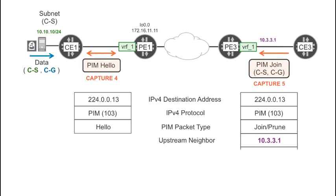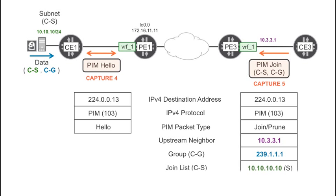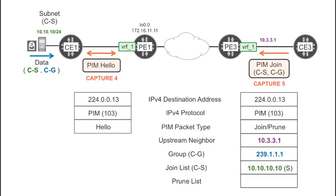Strictly speaking, there's no such thing as a PIM join — its real name is join-prune. Although most people call it a join if the packet has something in its join list and its prune list is empty.